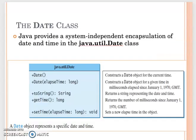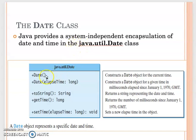Here we introduce the Date class. The Date class actually comes from java.util.Date. We will use this for our assignment. We will create a Date object. If you just use new Date(), it will give you the current time.